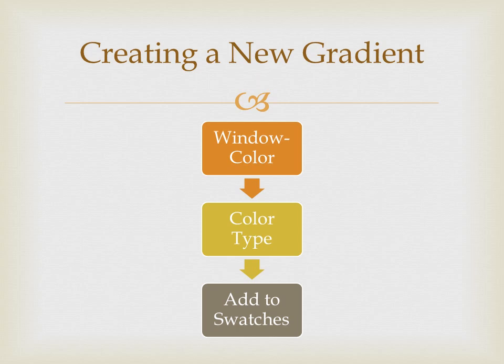Now double-click on the left color pointer below the gradient definition bar to select a color from the color plate. Similarly, double-click on the right color pointer and select another color. To add a pointer to the gradient, click on the gradient definition bar and select a color for the new pointer. To adjust the color blend, drag the pointer along the gradient definition bar. Lastly, to add the new gradient color to the swatches panel, click the Add to Swatches button in the color panel.